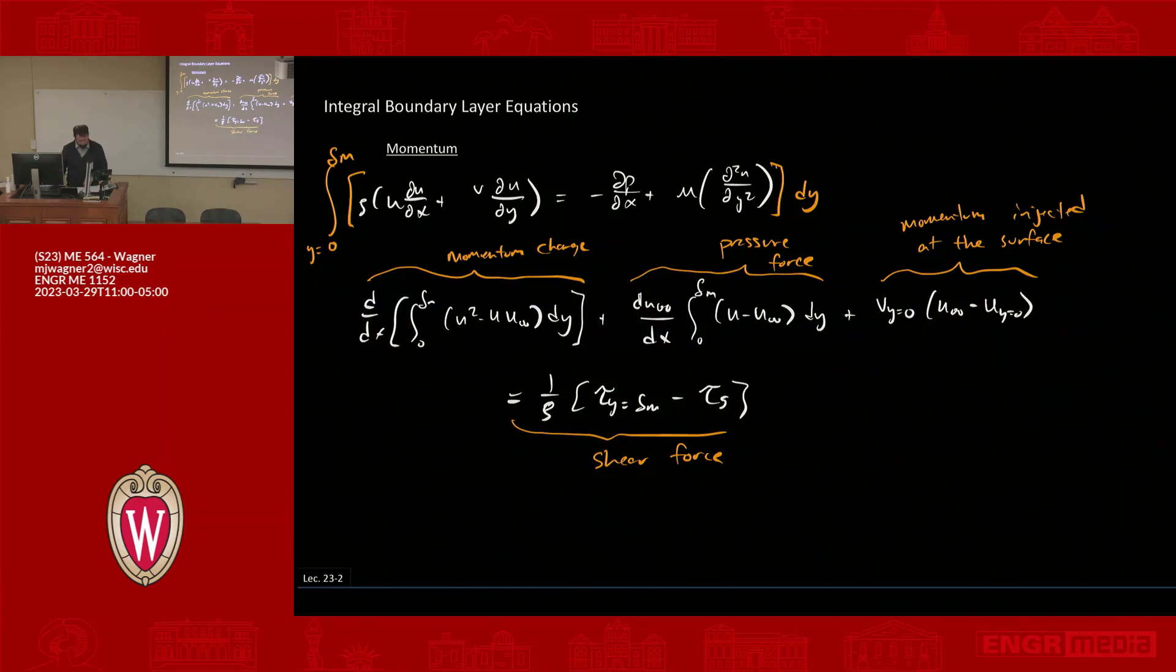So the energy equation is a similar thing. I'll just write out what it is. I'm not going to reproduce the original energy equation just because we're short on time, but this gives you d dx of the integral from zero to delta T of U times T minus T infinity dy. It's the first term. Again, there's four terms.